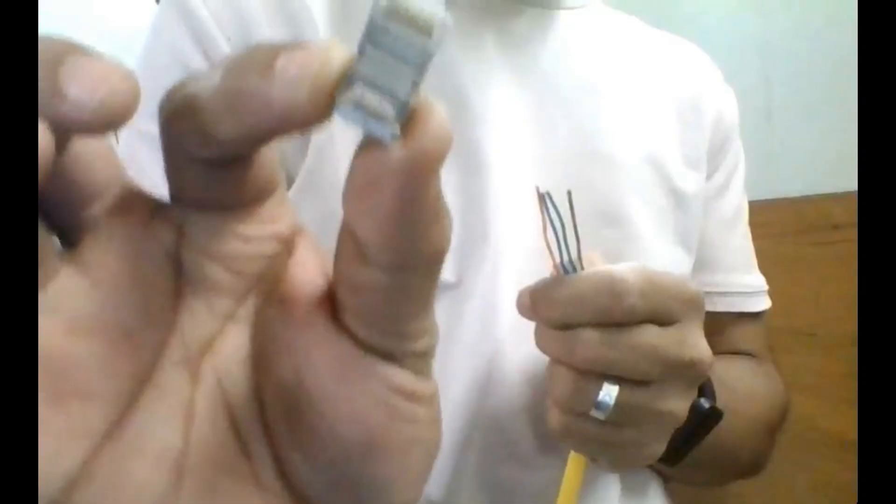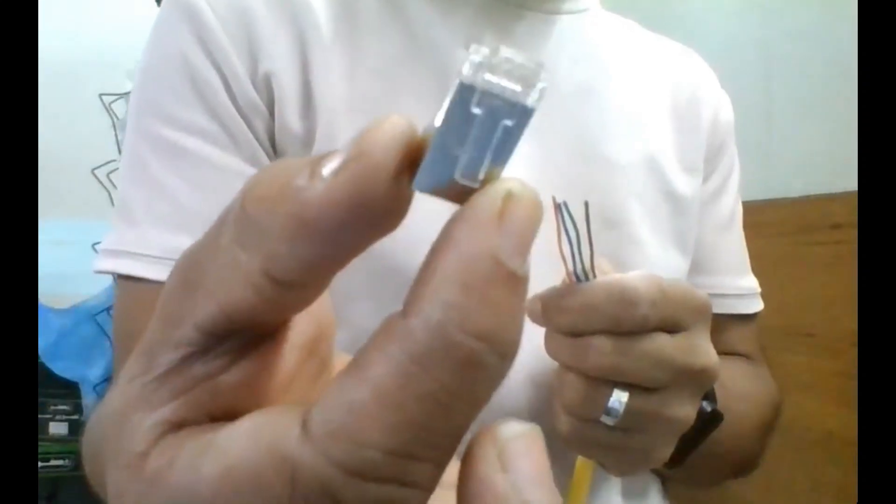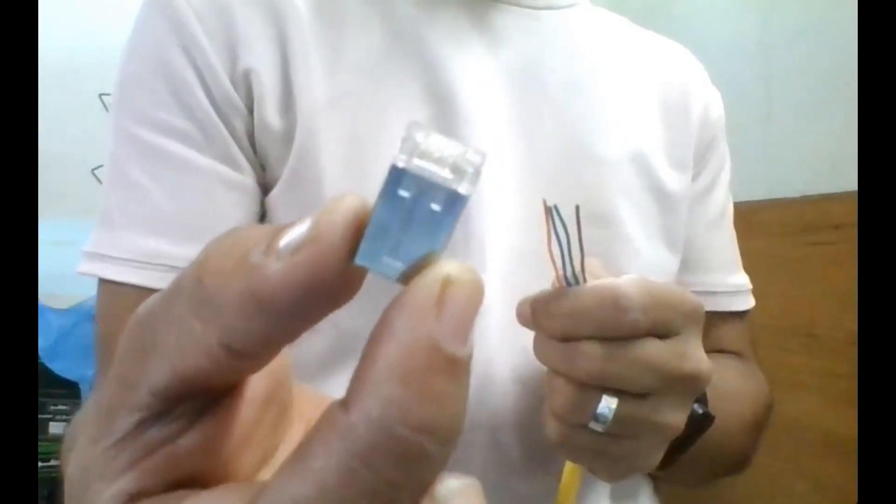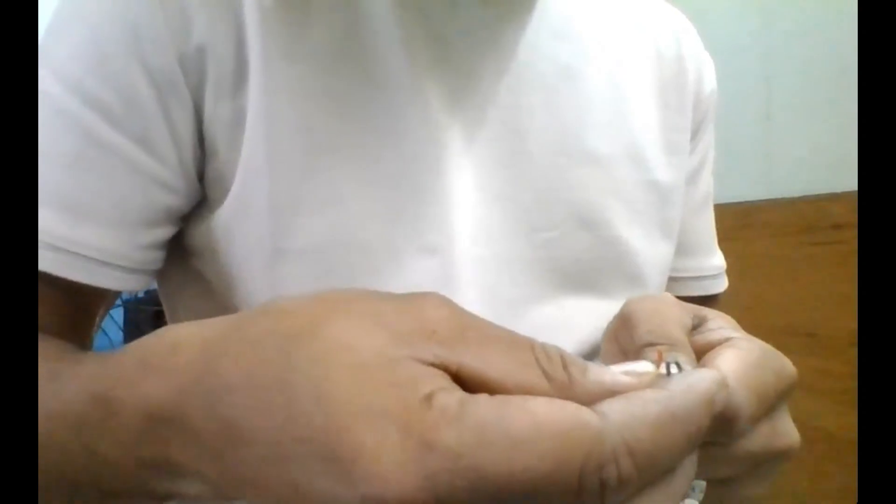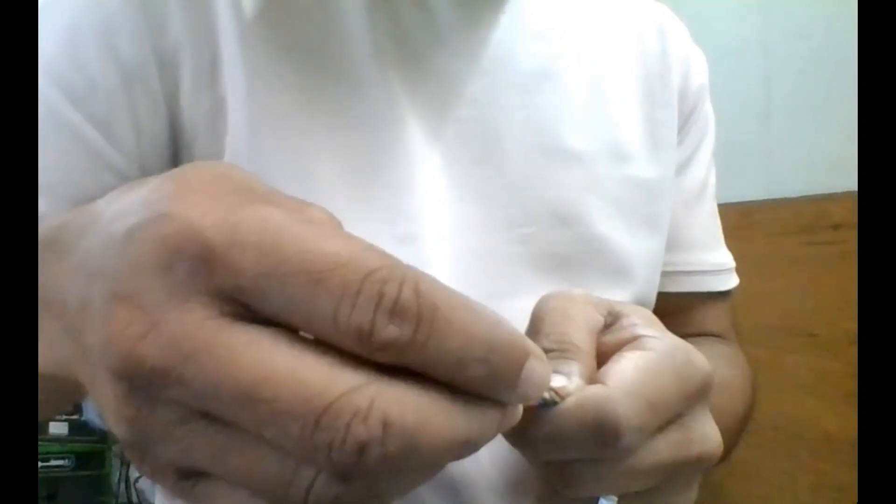See here, we have the crimping tool and then RJ45, and then a small connector here in white color. Here we have to put this small connector.